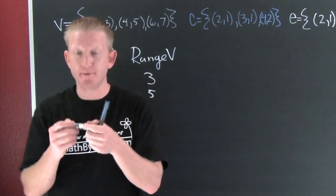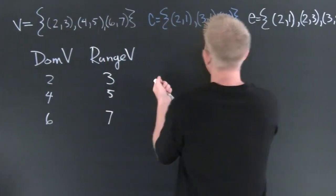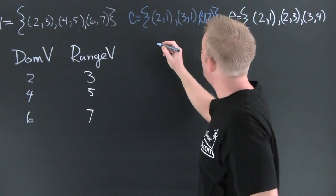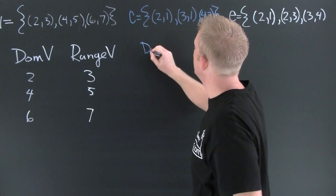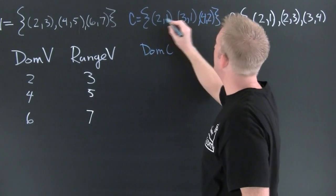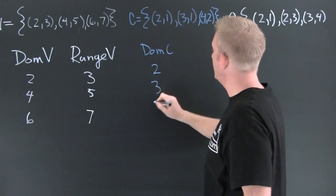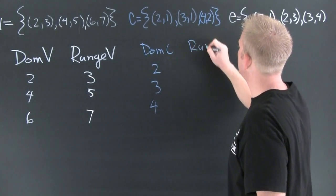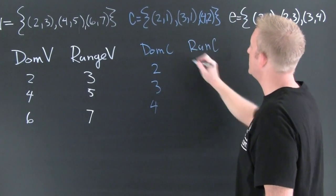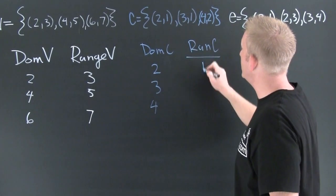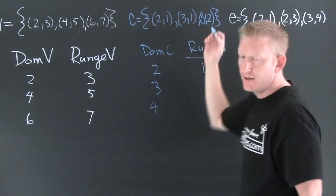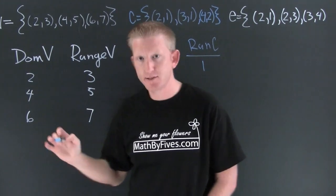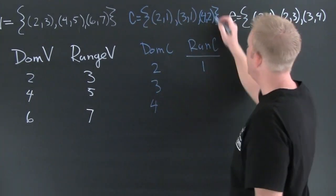For relation C, the domain is the set of all first elements: two, three, and four. The range of C is the set of all second elements, so one is in there and two is in there. I brought this example up because in a set you don't repeat elements — one appears twice in the pairs but is listed only once.